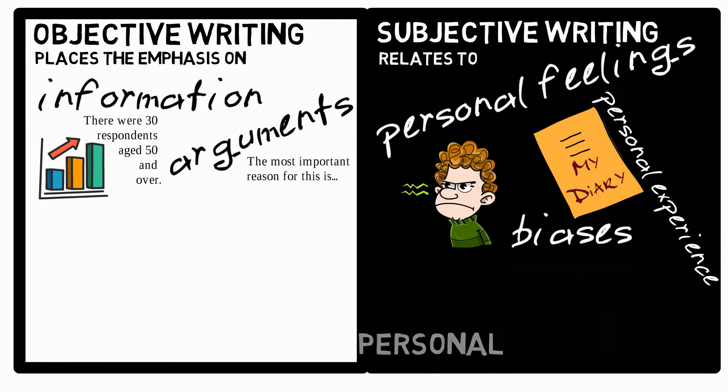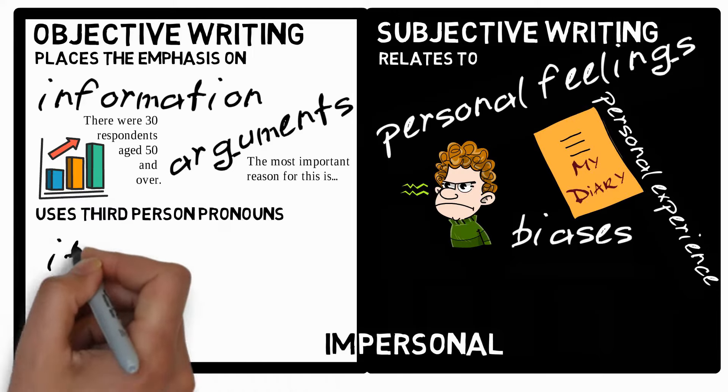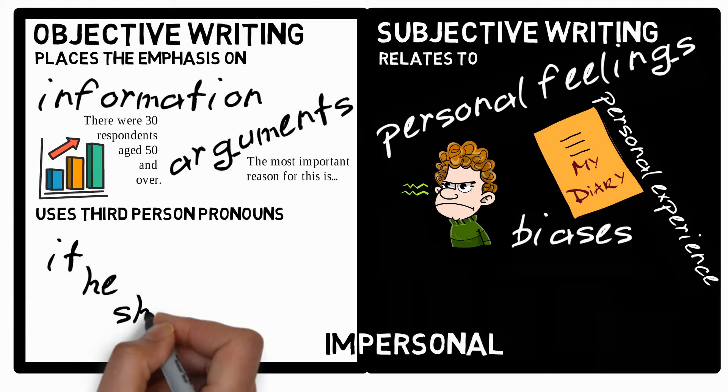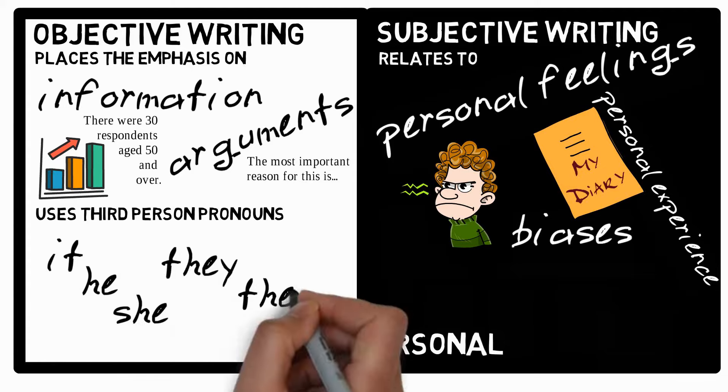Since objective writing is the opposite of personal writing, it's often described as impersonal writing. It tends to use third person pronouns: it, he, she, they, them.